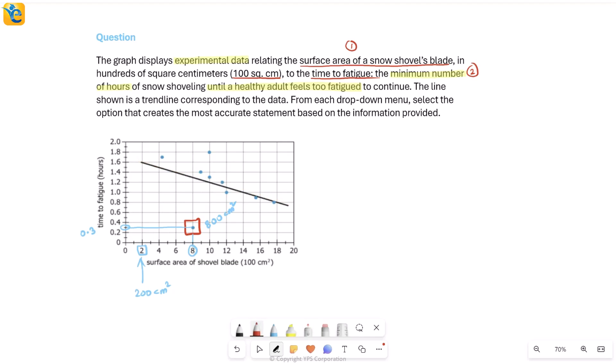The trend line shows how this generally comes down. As the surface area of your shovel blade increases and the blade gets bigger, it becomes harder to lift, so the number of hours before people get tired comes down. You get tired sooner, basically. Now let's see what the question is asking.